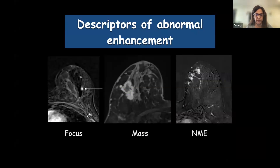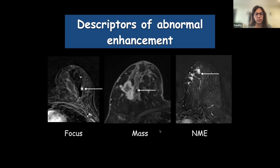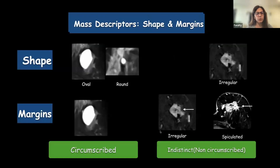When you see a contrast enhanced MRI, you either call the lesion a focus, a mass, or a non-mass enhancement. A focus is any lesion which is less than 5 mm and you cannot define the morphology. A mass has convex margins and you can see it in all planes, including on the pre-contrast scan. Anything which is not a focus or a mass is a non-mass enhancement.